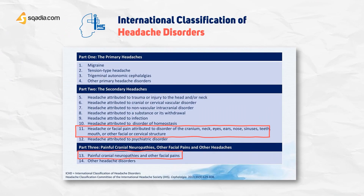The International Headache Society has 13 categories and only two out of the 13 are specifically for orofacial pain — categories 11 and 13 respectively. Category 11 includes temporomandibular joint disorders and disorders related to teeth, jaws, and related structures. Category 13 includes cranial neuralgias and central causes of facial pain.